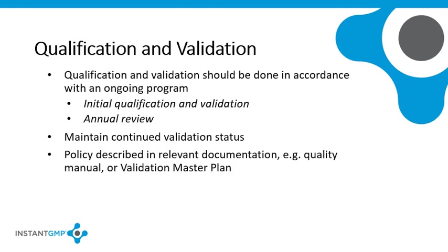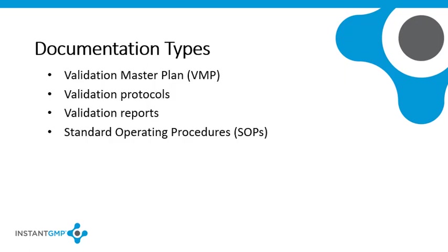There are different types of documents related to validation: master plans, protocols, reports, and SOPs. Each manufacturer should have a Validation Master Plan (VMP). It describes the overall philosophy, intention, and approach to establishing performance adequacy. It also identifies which items are subject to qualification and validation, and the nature and extent of such validation. It defines the applicable validation and qualification protocols and procedures.